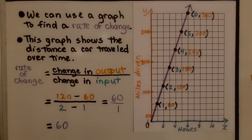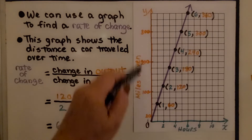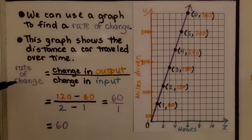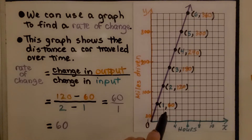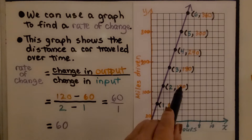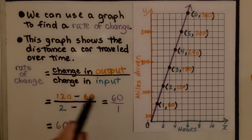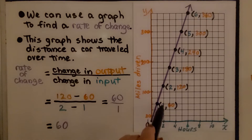We can use a graph to find a rate of change. This graph shows the distance a car traveled over time — hours and miles driven. Our rate of change is the change in the output (orange) to the change in the input (green). Choosing the first two ordered pairs, we have 120 and 60; subtracting gives 60. We have 2 and 1; subtracting gives 1. Our rate of change is 60.